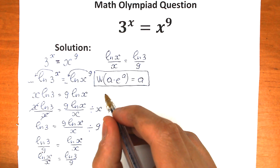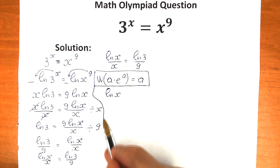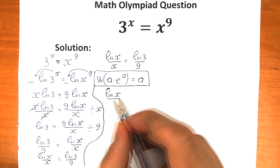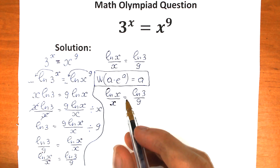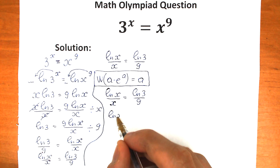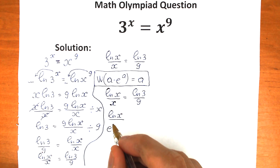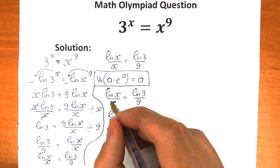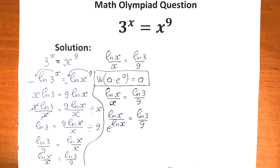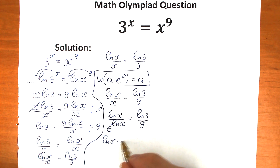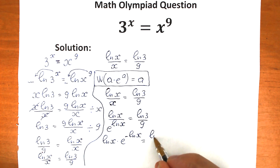Let's rewrite this expression. We have natural log x over x equal to natural log 3 over 9. We can rewrite x in the denominator as e to the power natural log x, giving natural log x over e to the power natural log x. Now let's bring this e to the numerator: we get natural log x times e to the power minus natural log x, equal to natural log 3 over 9.